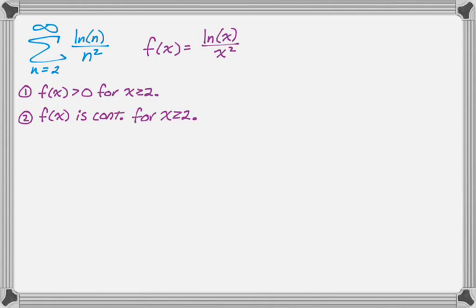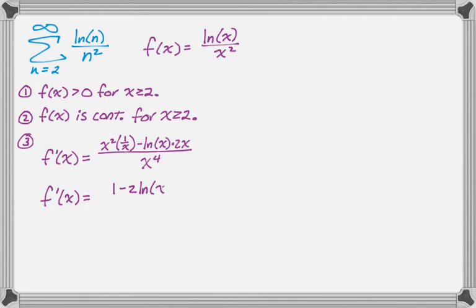So what I'm going to do is the calc one way. I'm going to take the derivative. So the derivative of this thing, it's a quotient. We need the quotient rule, so it's going to be bottom, and then derivative of the top minus top, and then derivative of the bottom is 2x, and then all over the bottom squared. So we get this, and then this can be simplified. So we get f prime of x is 1 minus 2 natural log of x all over x cubed.